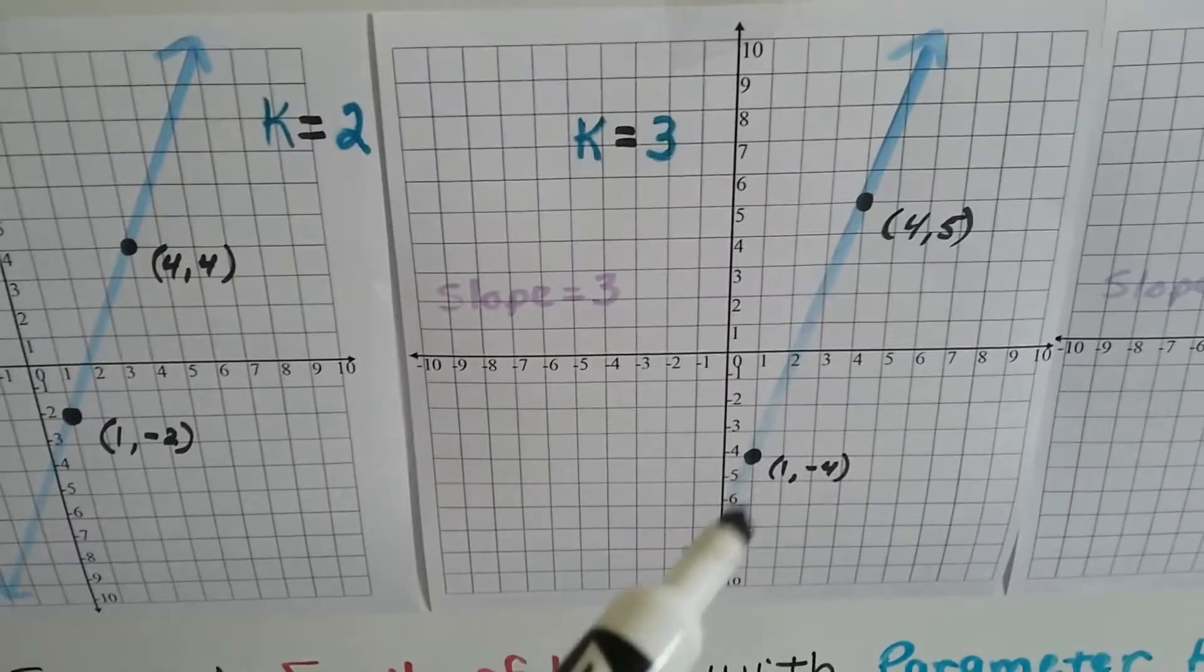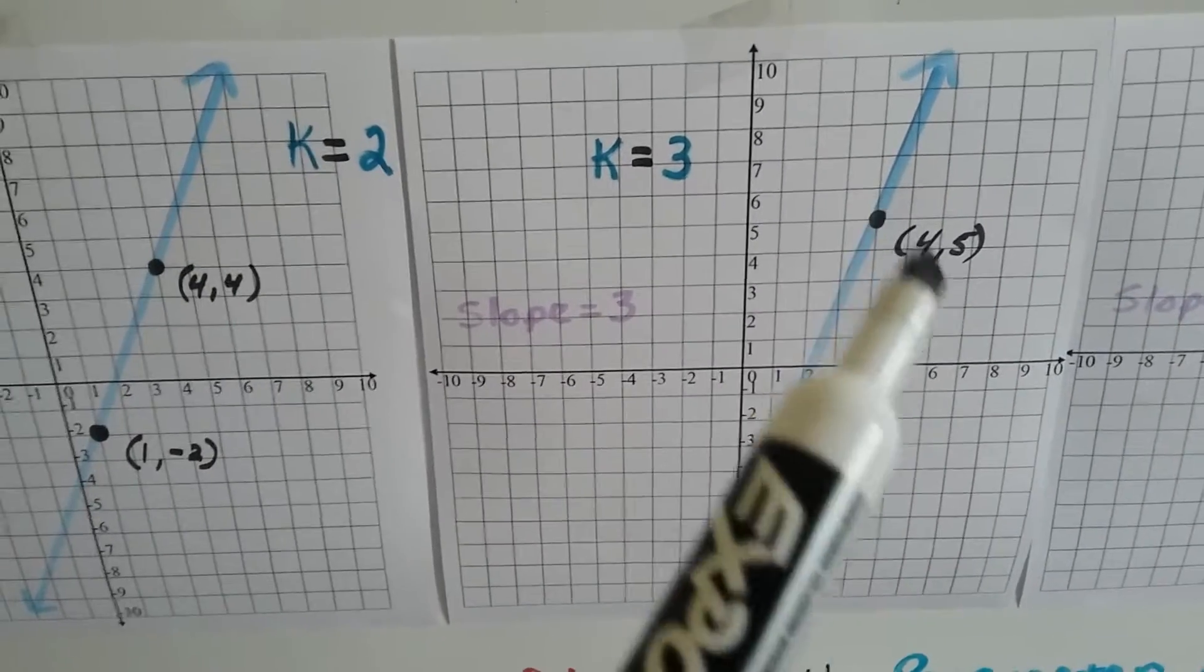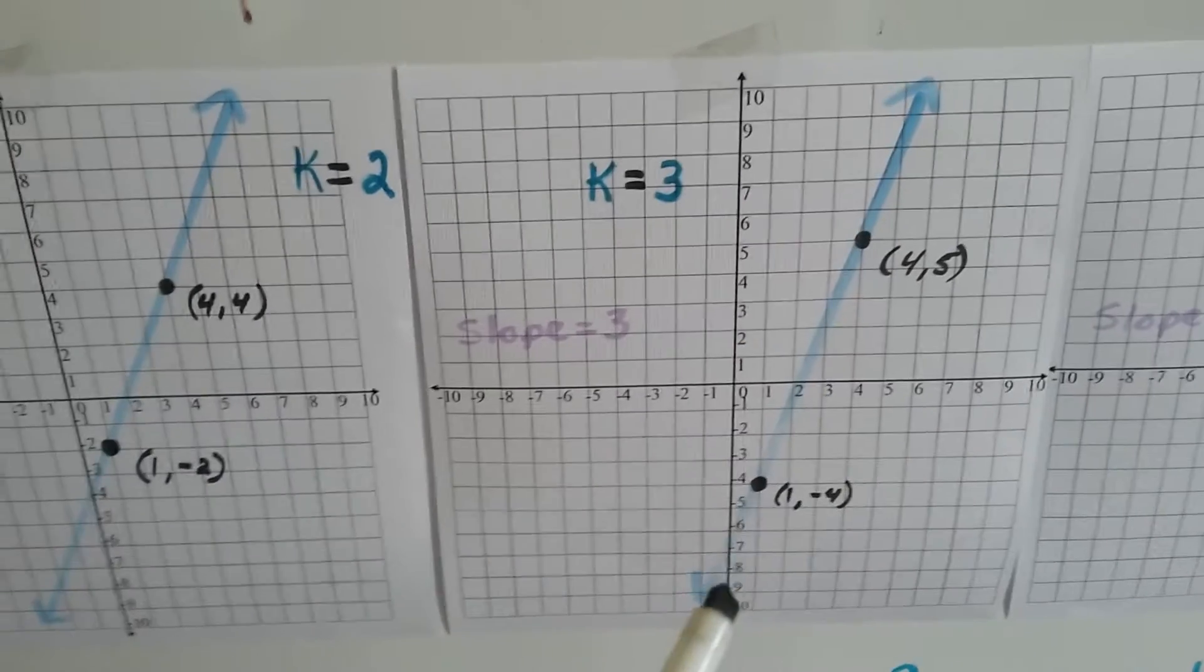Here's the 1 and negative 4, and the 4 and the 5. And this is where k equals 3.